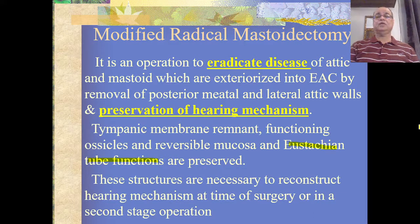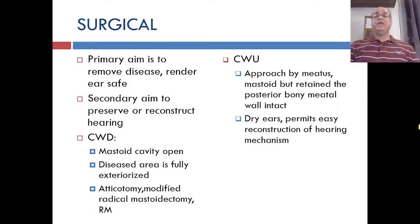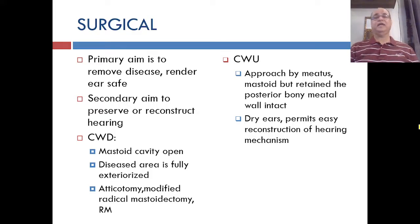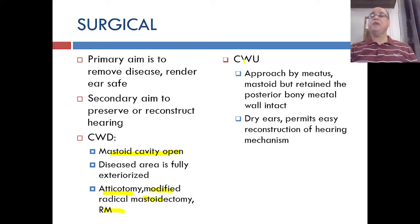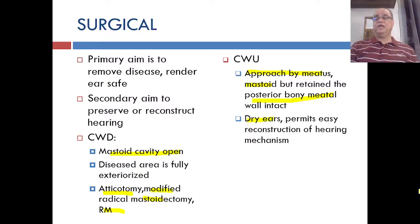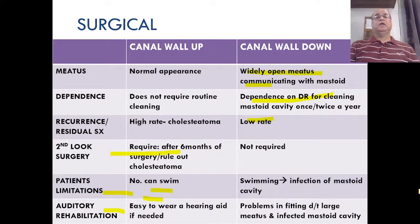These structures are necessary to reconstruct the hearing mechanism at the time of surgery or in a second stage operation. The primary aim is to remove the disease and make the ear safe; the secondary aim is to preserve or reconstruct hearing. In canal wall down procedures there is a mastoid cavity which is very open and the disease area is fully exteriorized into the external auditory canal. Atticotomy, modified radical mastoidectomy, and radical mastoidectomy are all canal wall down procedures.